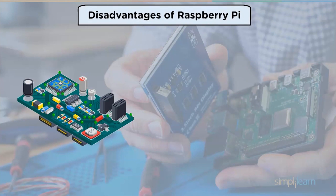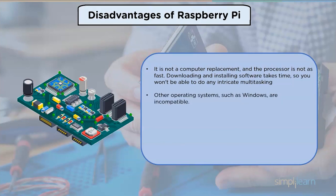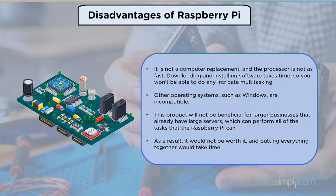Disadvantages of Raspberry Pi: It is not a computer replacement and the processor is not as fast. Downloading and installing software takes time, so intricate multitasking is not possible. Other operating systems such as Windows are incompatible. This product will not be beneficial for large-scale businesses that already have large servers which can perform all the same tasks, so putting everything together would not be worth it and would take time.